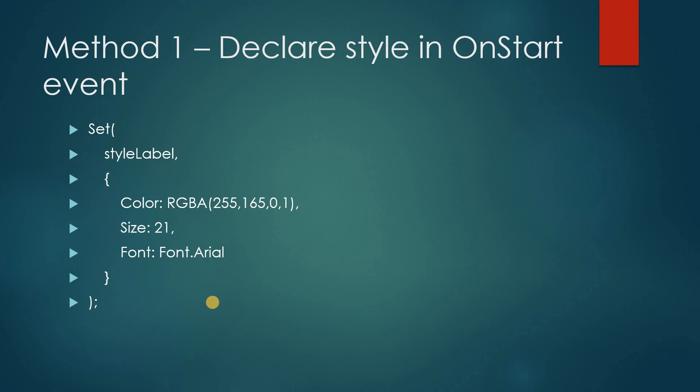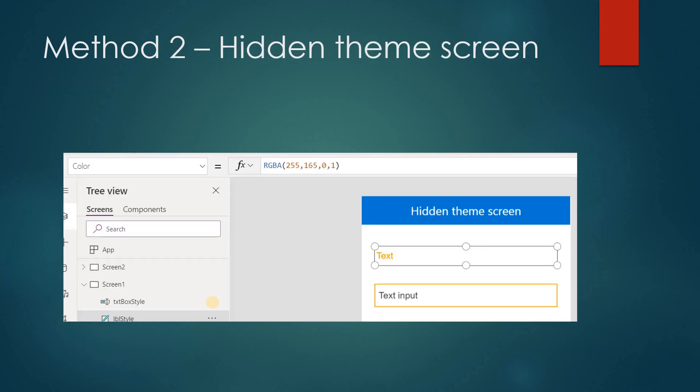Method one, as I said earlier: in the app OnStart event, you will create one global variable, and in that variable there will be some properties — like dot color, dot size, dot font. I will use it for labels only, but you can create it for buttons and other controls as well. Method two is a hidden screen. In this hidden screen, you can put one label, change the color of that label, rename it as LVL_Style, for example.